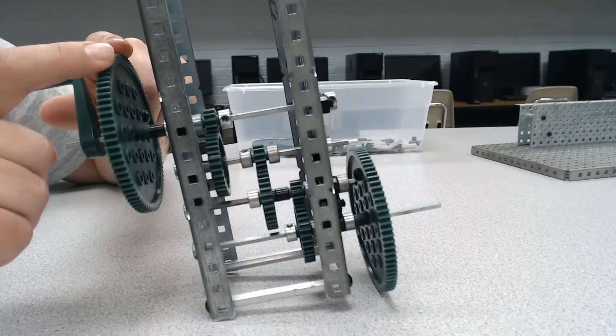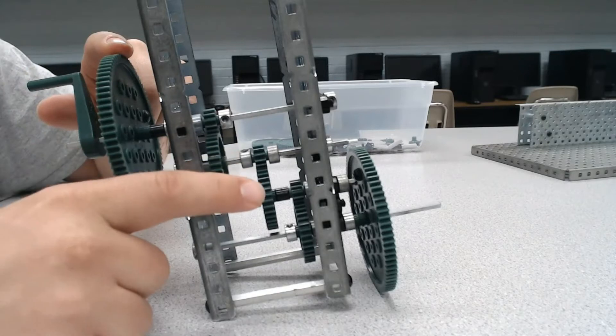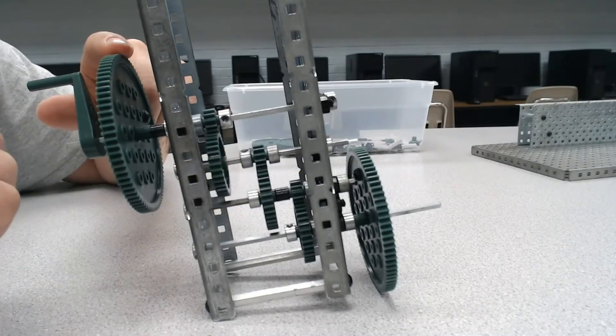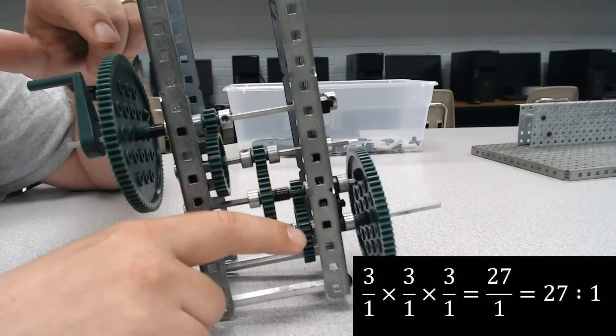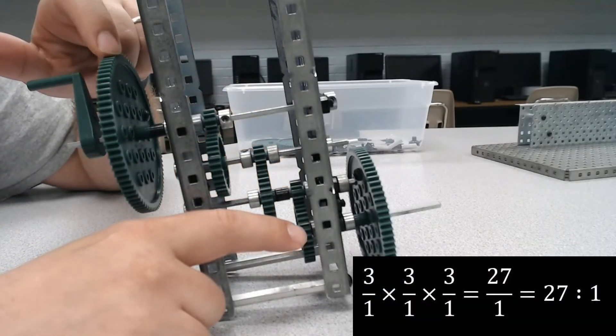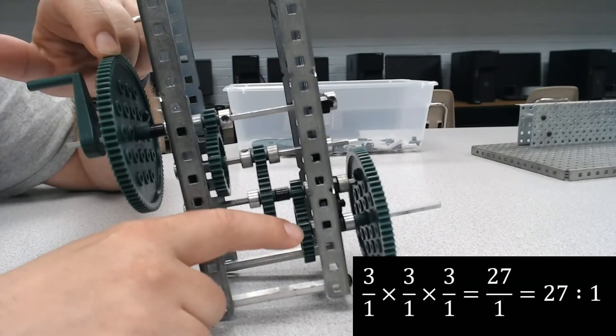So three-to-one times three-to-one means nine-to-one between here and here. So nine rotations here to get one turn out of that gear. We multiply again by three to get 27 down there. So one turn here, 27 turns here to get one turn out of this gear.